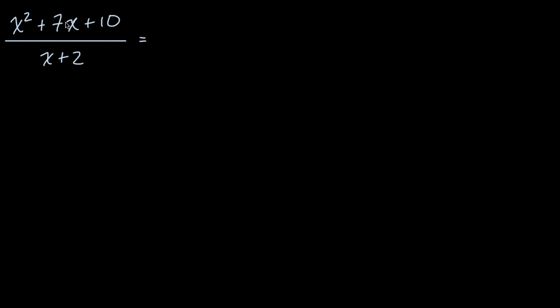We've done this many times. If this looks new to you, I encourage you to review factoring polynomials other places on Khan Academy. But what two numbers add up to seven and when you multiply them you get 10? Well, that would be two and five.